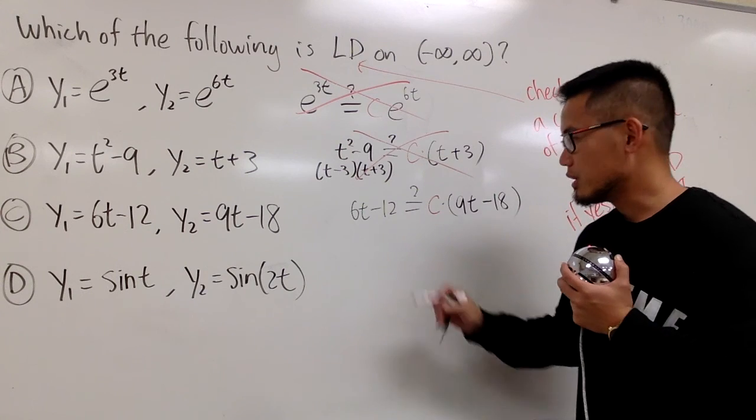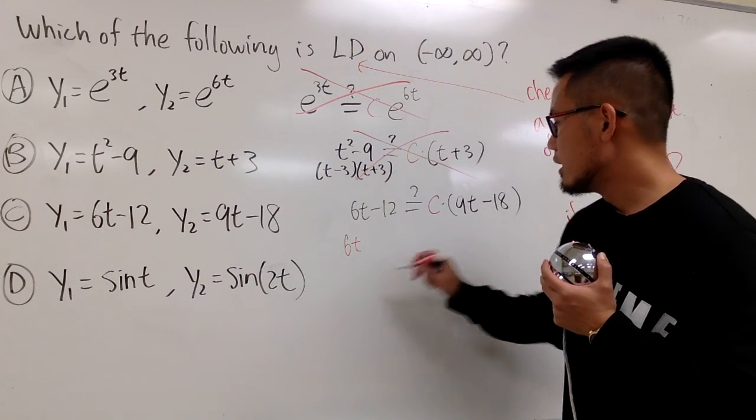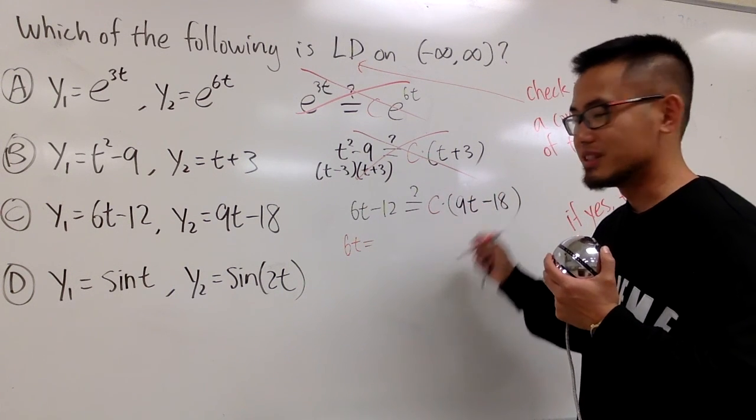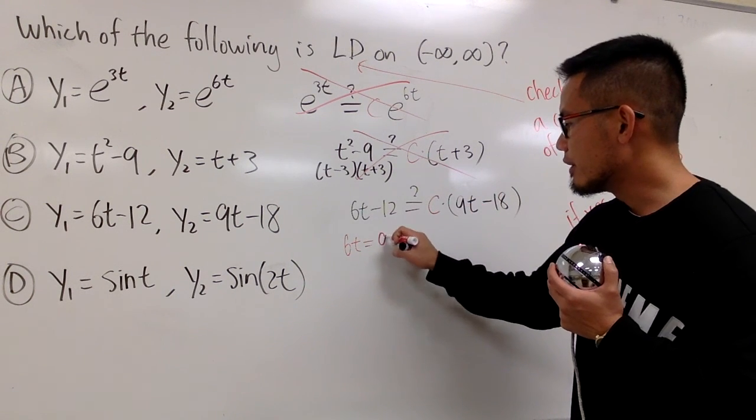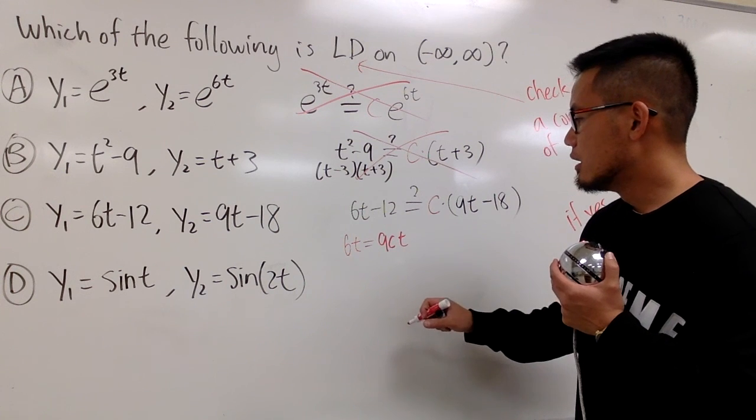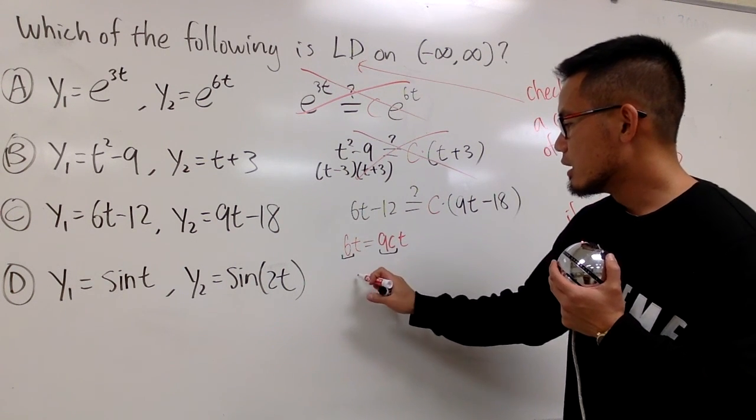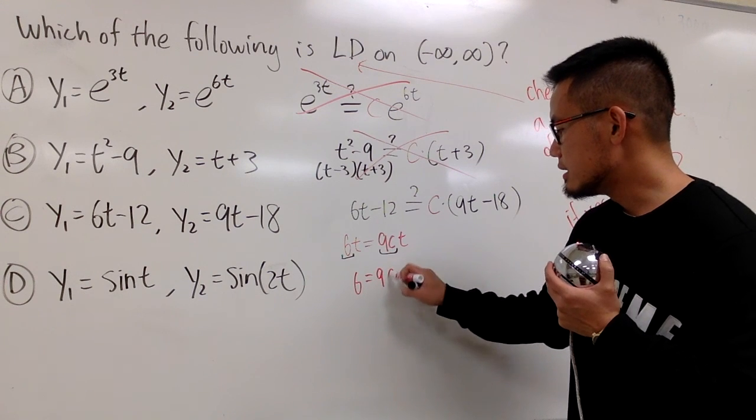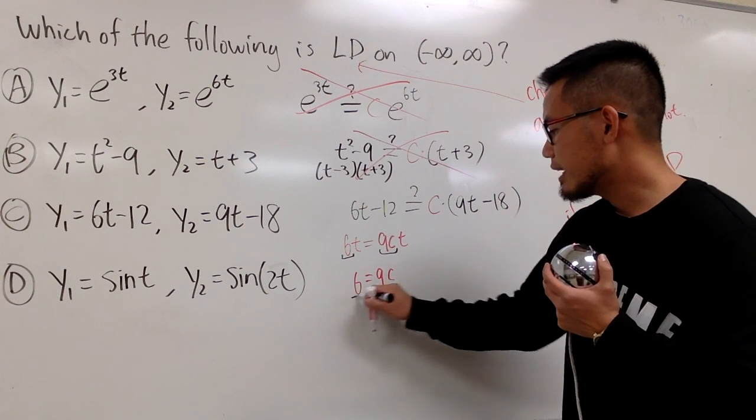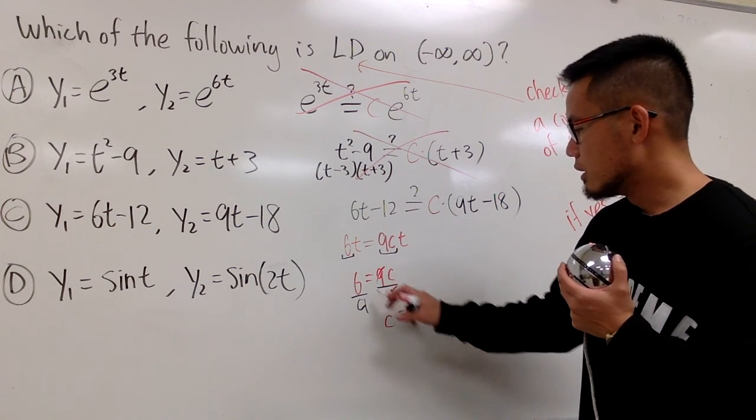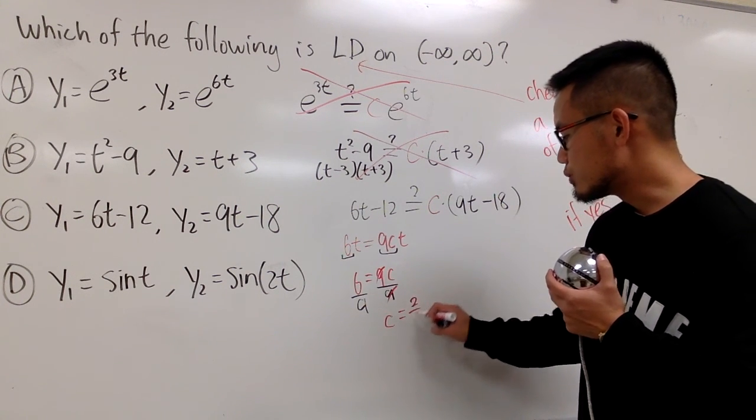For the first term only, here, I have 6t. Here, I have 9 times c, because I have to distribute the c, right? So, I will put down 9ct. If you ignore the t, just match the coefficient. You are saying, 6 is equal to 9c, and of course, I can divide by 9 on both sides. So, I am saying, c should be 6 over 9, which is the same as 2 third.